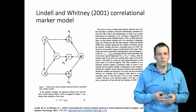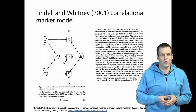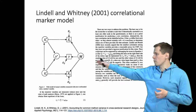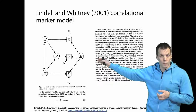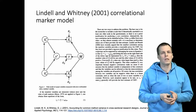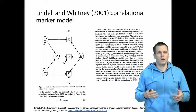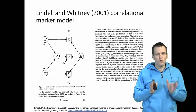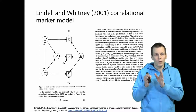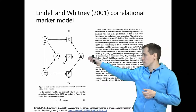The idea of marker variables is commonly attributed to an article by Lindell and Whitney in the Journal of Applied Psychology. This started from the assumption that there is a single source of method variance that affects all items equally, or at least to the same proportions, and that constructs are another source of variance. If we have two constructs that are uncorrelated, then the only reason why their measures would be correlated is because of this shared source of method variance.